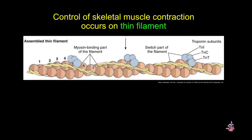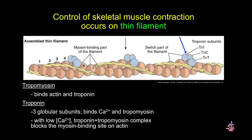We'll begin with control of skeletal muscle contraction. In this cartoon, we see the assembled thin filament — that is, actin with its associated proteins. These proteins include tropomyosin, seen here in yellow wrapping around actin, and troponin, which has three subunits that binds both calcium and tropomyosin. When calcium levels are low in the cell, troponin and tropomyosin together block the myosin binding site on actin. It's really the regulation of the availability of this binding site that drives striated muscle contraction.